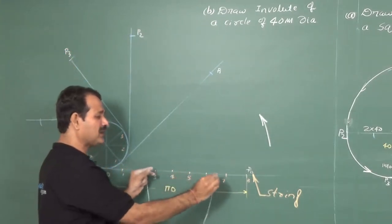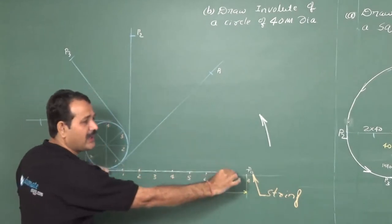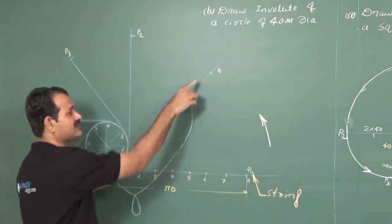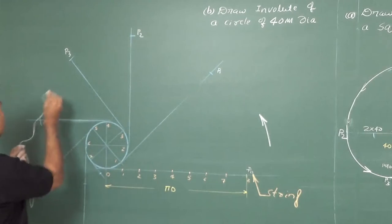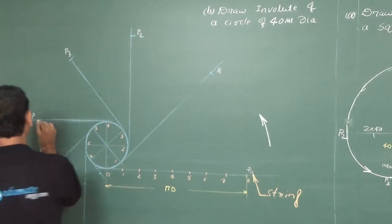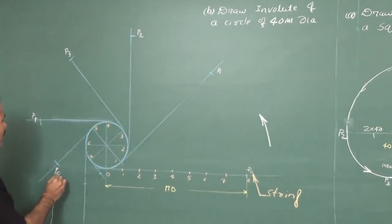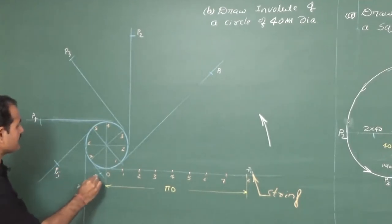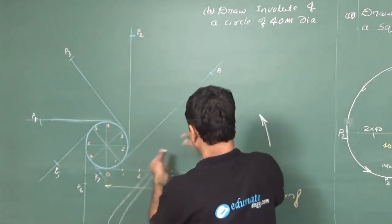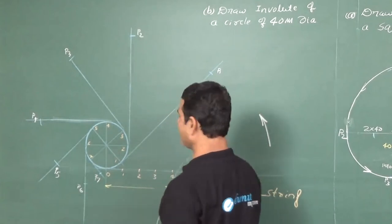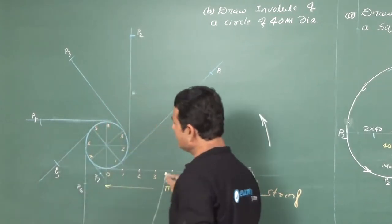Continuing this process, at each successive point on the circle I reduce the string length by one division. At point 3 on the circle, I take length from 3 to 8; at point 4, length from 4 to 8, and so on — cutting points P3, P4, P5, P6, and P7. At point 7, only the last division remains, and when fully wound the string length reaches zero.